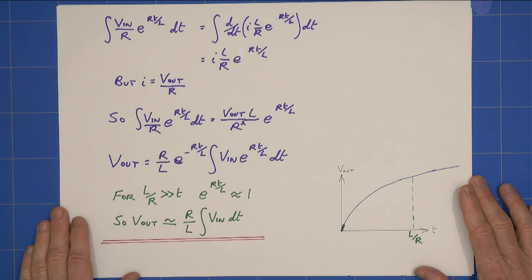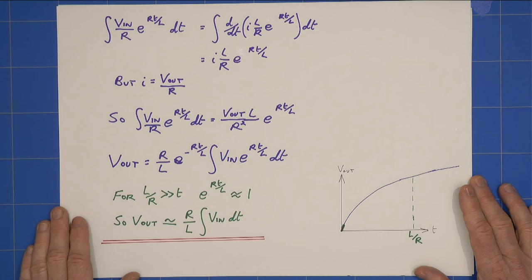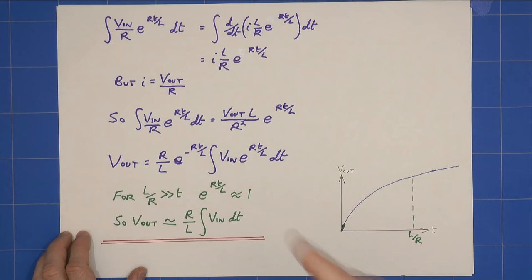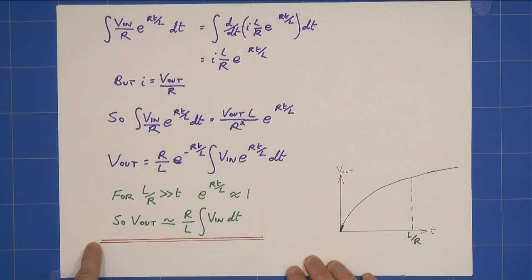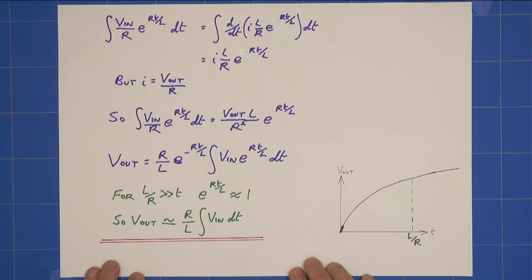OK, and for large l over r with respect to t, this term is approximately 1. So I can then say, to explain how it integrates, I get v out is approximately r over l integral of v in dt.